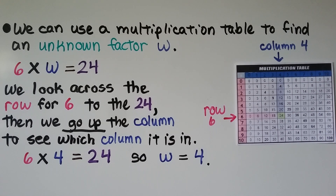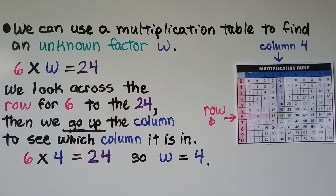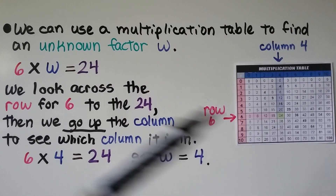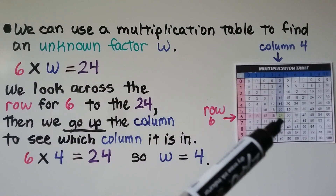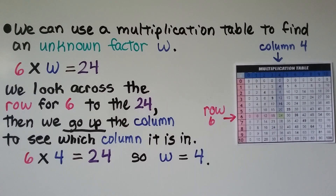We can use a multiplication table to find an unknown factor w. The equation is 6 times w is equal to 24. We need to find the value of w. We look across the row for 6 until we see 24, then go up the column to see which column it's in — it's in the column for 4. So w is equal to 4.